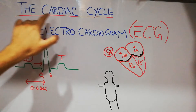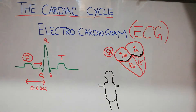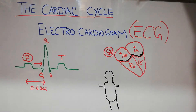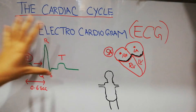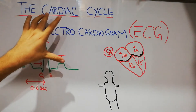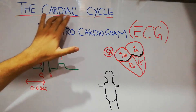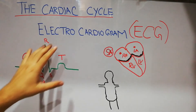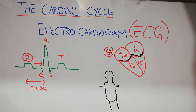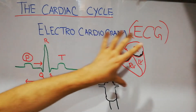In the next few series of lectures we will be discussing the cardiac cycle, which simply means how the heart starts pumping and pumps the blood to the whole body, and then the blood returns to the heart and pumps again. Before discussing the cardiac cycle in detail, we need to know the electrocardiogram — just the simple concepts of the ECG.